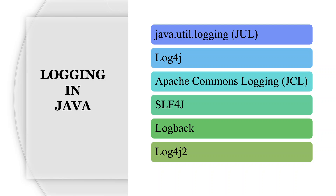In this video we're going to learn about logging in Java. Whether you're developing a new application or working on an existing one, you'll definitely come across logging. Logging is writing user actions or application state to a file, which can later be used by the support or operations team to know what is happening in the application. It can also be used to troubleshoot issues reported by end users.